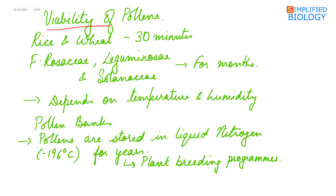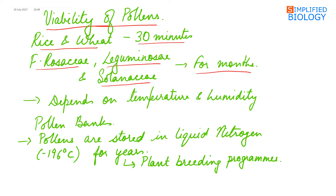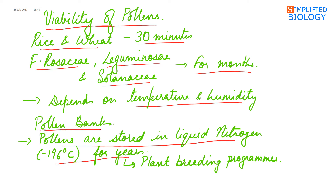The viability of pollens — the time till they remain functional or able to germinate — differs in different plants. In rice and wheat, the pollens are viable for just 30 minutes, while in members of family Rosaceae (the rose family), Leguminaceae, Solanaceae (the potato family), and the tea family, the pollens are viable for months. Pollen viability also depends upon environmental conditions like temperature and humidity. Pollens are stored in liquid nitrogen at minus 196 degrees Celsius for years in pollen banks, and these stored pollens can be used in crop breeding programs.